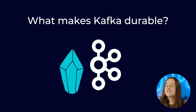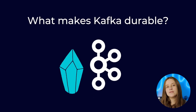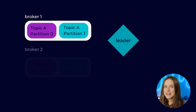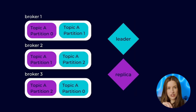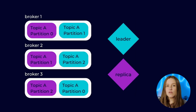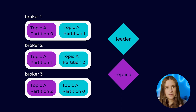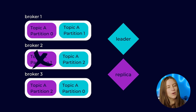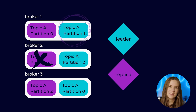What makes Kafka so durable? Well, Kafka copies the data in each lead partition to some number of follower partitions across the cluster. So if a node fails, whether it's a leader or a replica, it's backed up.